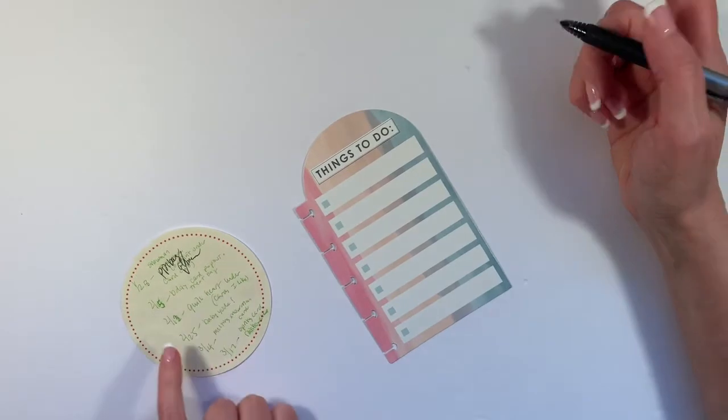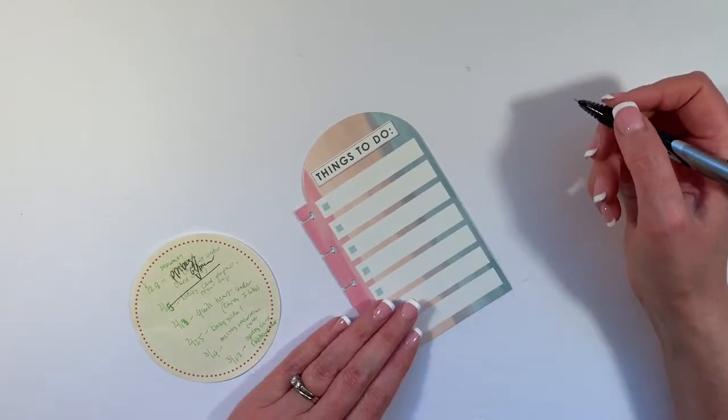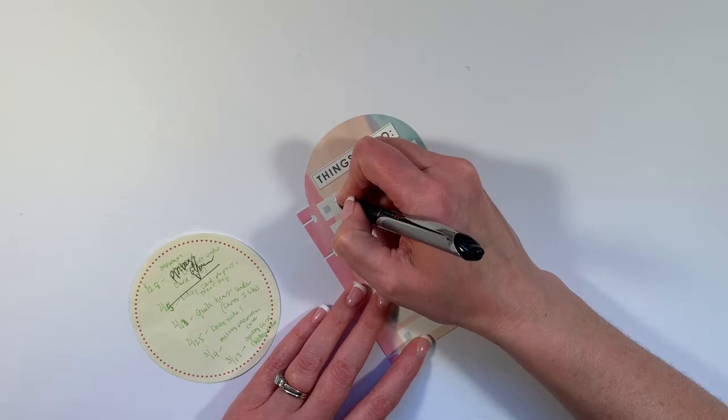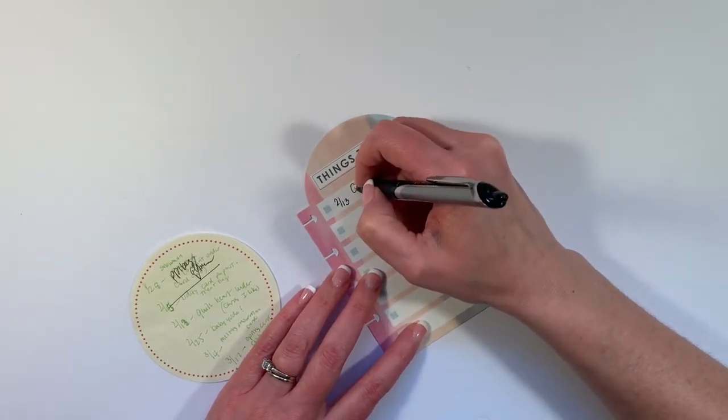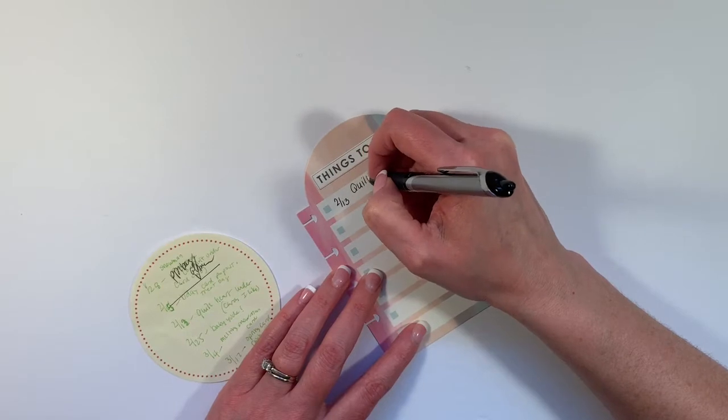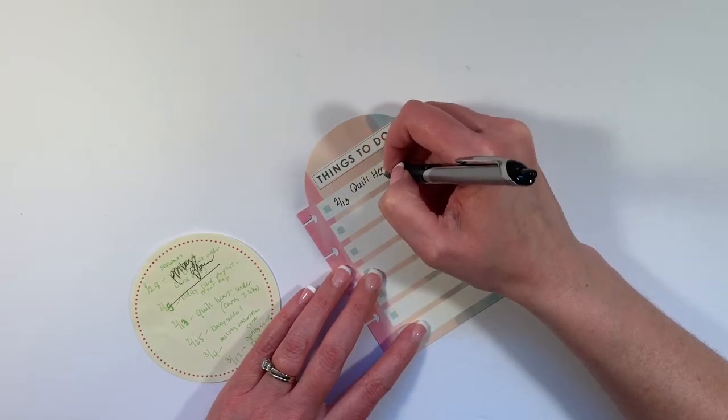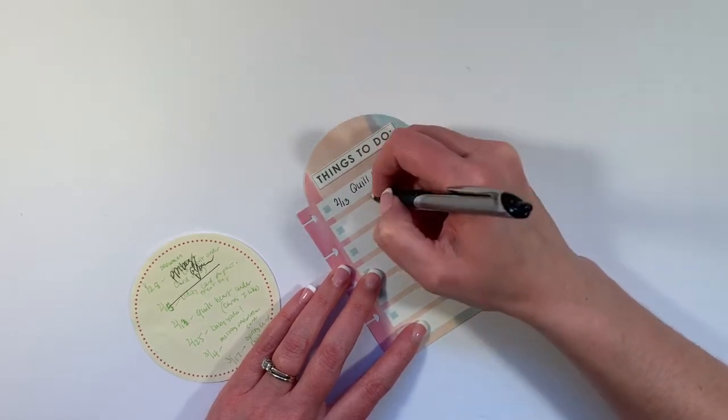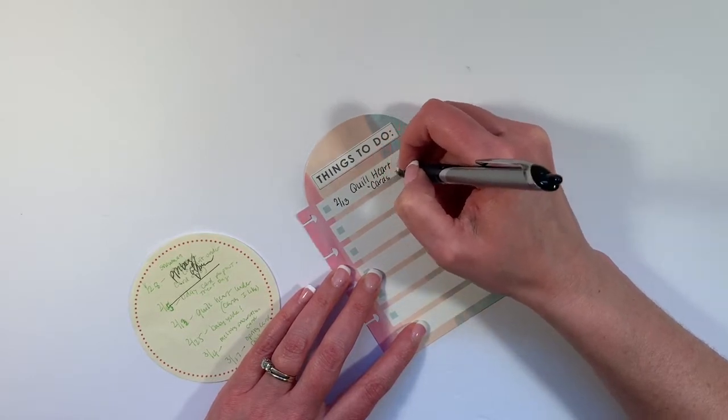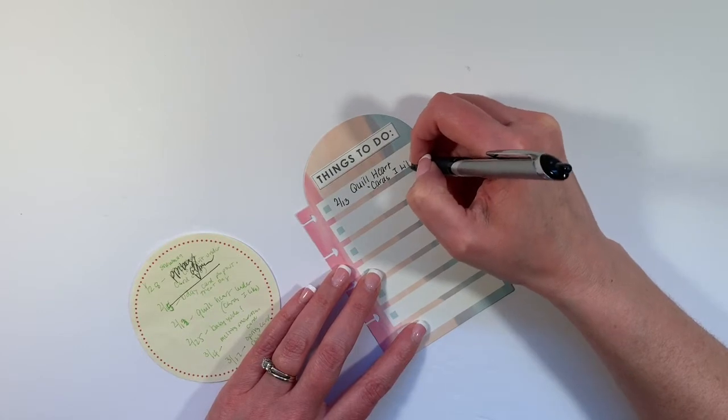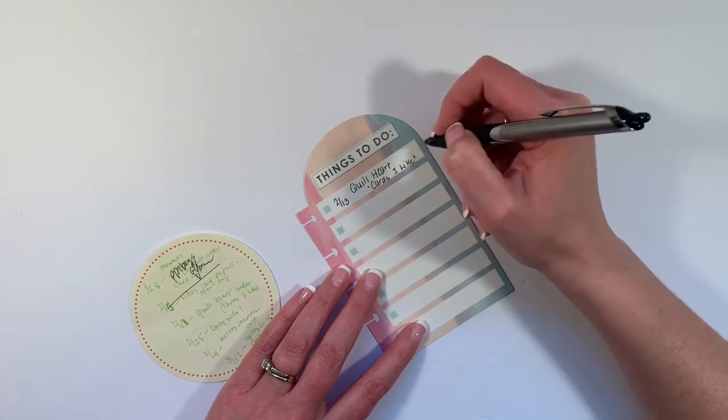And I've already done these two, so I'm going to cross this out. So the next date is 2/13, and we are going to make a quill heart. And I still have that on my Pinterest account under cards I like. And if I write cards I like, I'll know where to look for those instructions.